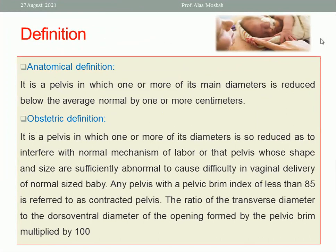Let us start with the definition of contracted pelvis. It has two definitions: an anatomical one and an obstetric one. In the anatomical definition, contracted pelvis is one in which one or more of its main diameters is reduced below the average normal by one or more centimeter. The obstetric definition is a pelvis in which one or more diameters is so reduced as to interfere with the normal mechanism of labor, or whose shape and size are sufficiently abnormal to cause difficulty in vaginal delivery of a normal-sized baby.